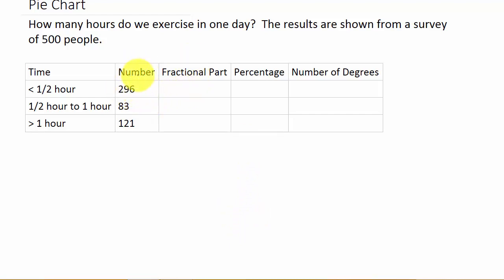The fractional part is just the total number that exercises less than half an hour over the total number of people that were surveyed. So that would be 296 divided by 500. And then half an hour to an hour, 83 over the total of 500. And then exercises more than an hour, 121 over the total which is 500.